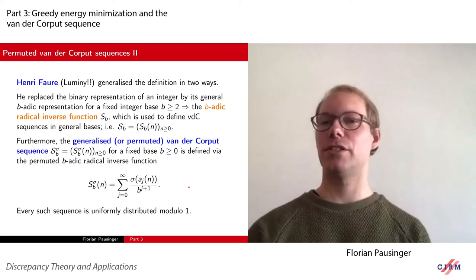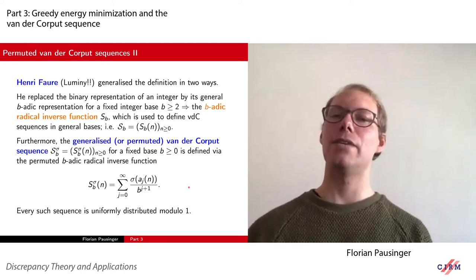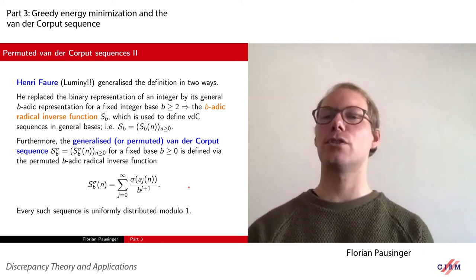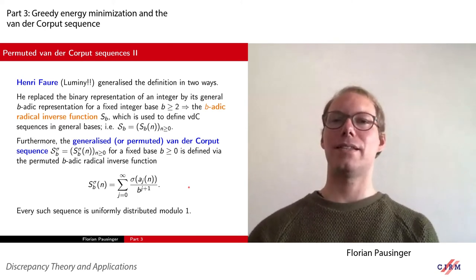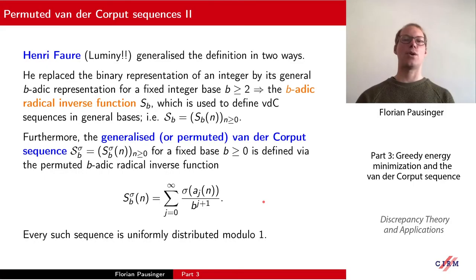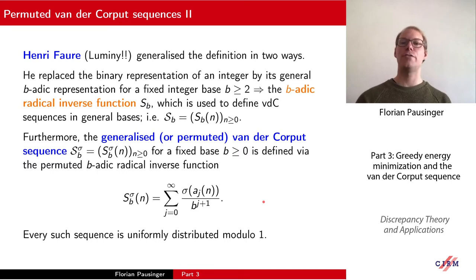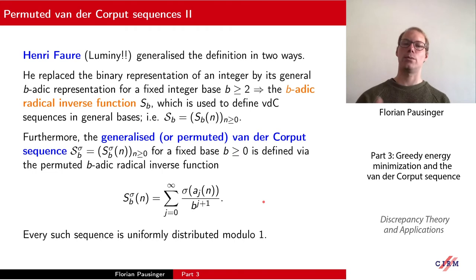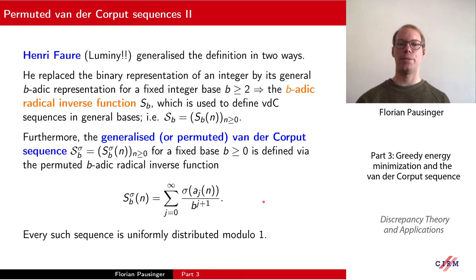In this way he introduces permutations, which makes the class of sequences he can consider much larger. He showed that every such sequence is uniformly distributed modulo 1, and even more, every such sequence is actually a low-discrepancy sequence. This immediately leads to the question: which permutations work well? Are there permutations that give better results than the identity permutation, which would revert to the classical van der Corput sequence? Faure studied these questions in a series of papers and derived very interesting results.